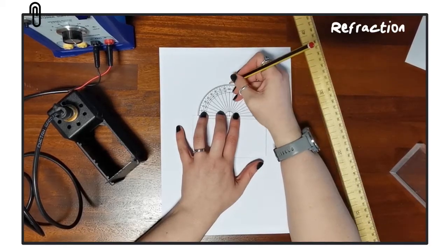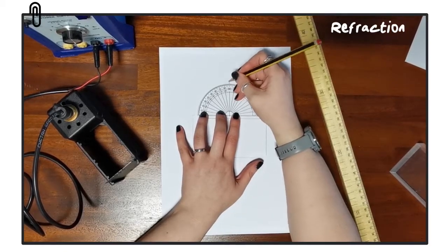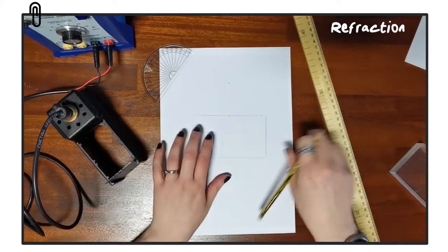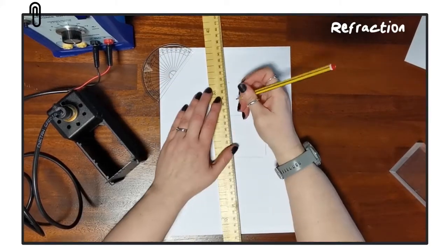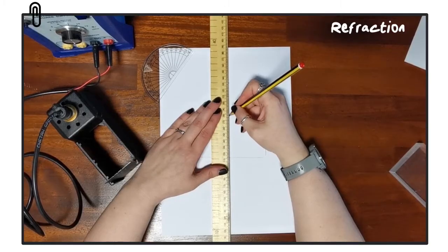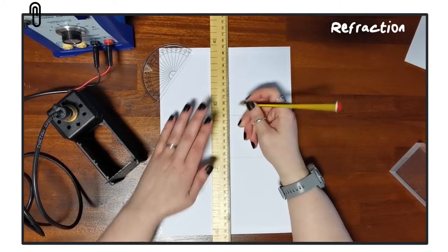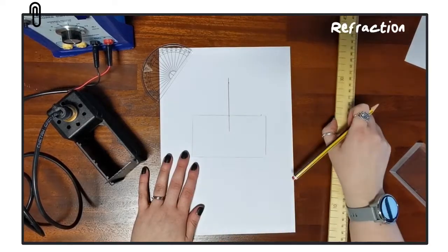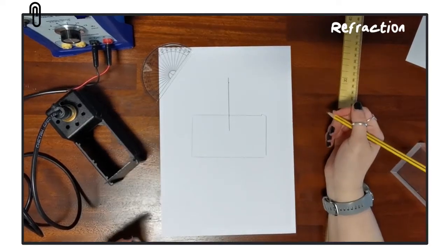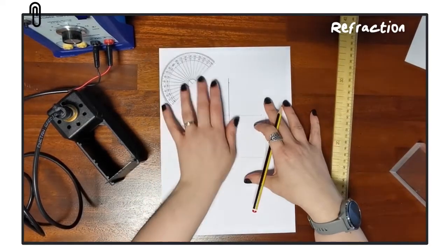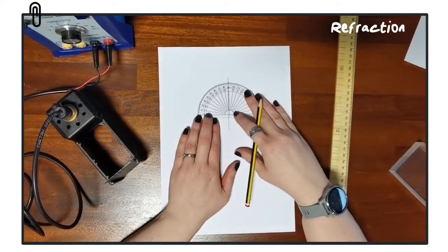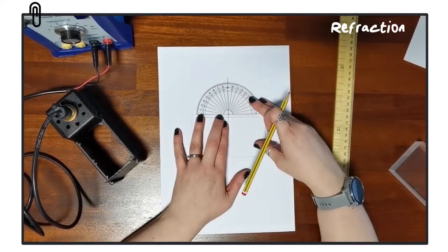This normal is important because this is what we use to measure all our angles from. Every angle is measured between the ray of light and the normal. So for the angle of incidence, it's between the incident ray and the normal. For the angle of refraction, it's between the refracted ray and the normal. So although that line isn't actually there, there's no ray of light at that point, it is important for us to take our measurements.